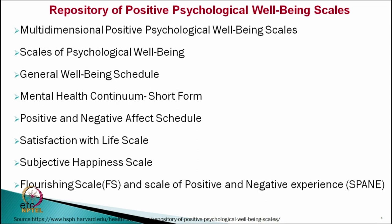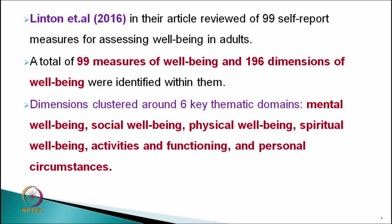There is a long list of psychological tests on happiness based on different theories. In all these psychological tests, to some extent they share their percentage of variance and to some extent they are unique. For example, in a meta-analytic research, Linton et al. in 2006 reviewed the literature and found 99 measures or psychological tests of well-being. They identified these psychological tests covered 196 dimensions of well-being.